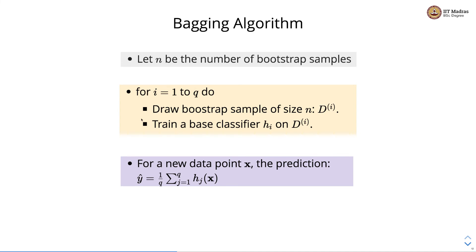After performing this particular step, we basically have q different classifiers and for a new data point x, we obtain the prediction by taking the average of predictions from these q classifiers. This is a generic formula that we have written over here.